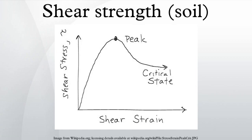Undrained strength describes a type of shear strength in soil mechanics as distinct from drained strength. Conceptually, there is no such thing as the undrained strength of a soil; it depends on orientation of stresses, stress path, rate of shearing, and volume of material. Undrained strength as typically defined by Tresca theory, based on Mohr's circle, as σ₁ − σ₃ = 2Su, where σ₁ is the major principal stress, σ₃ is the minor principal stress, and Su is the undrained strength.